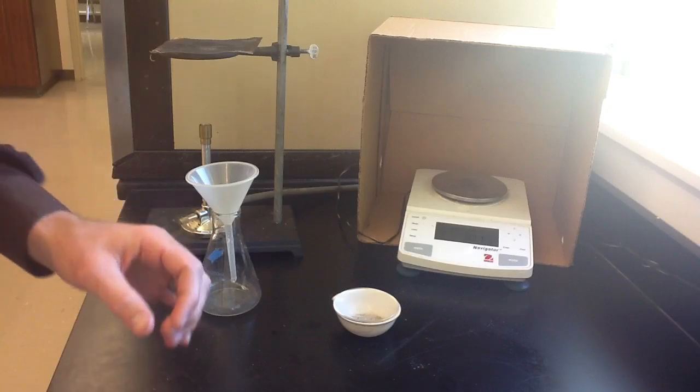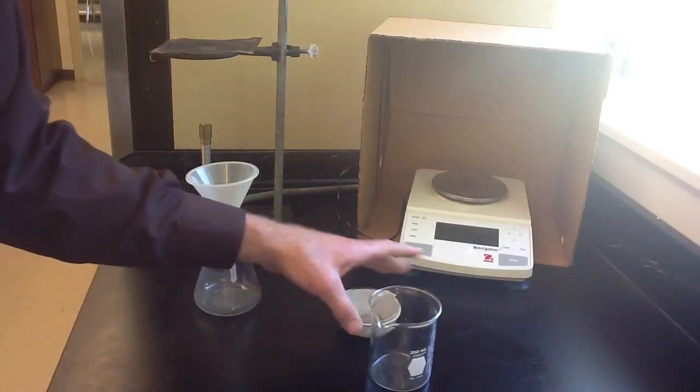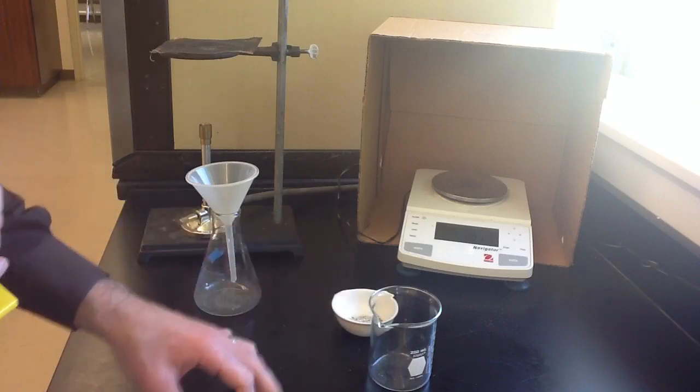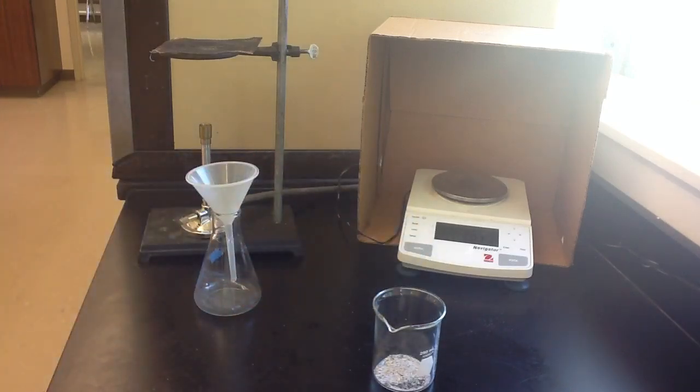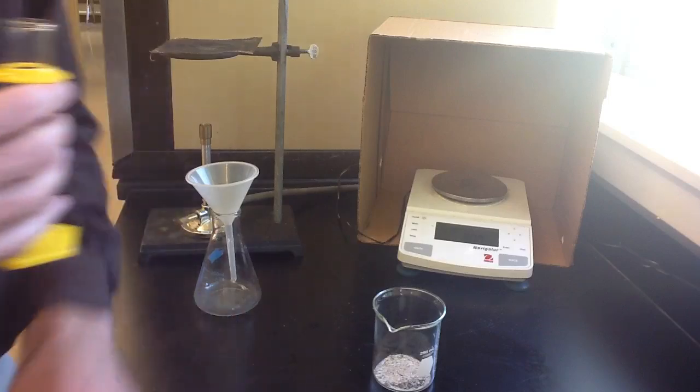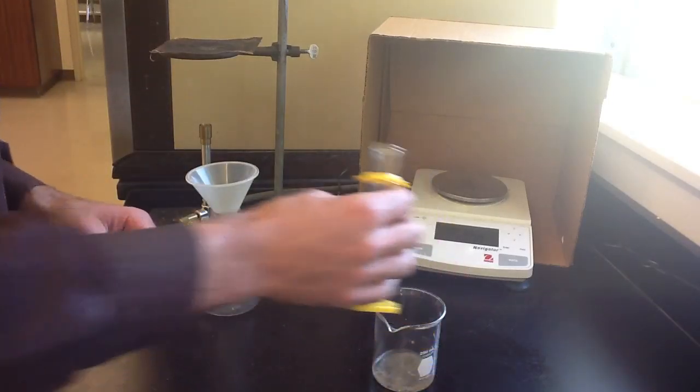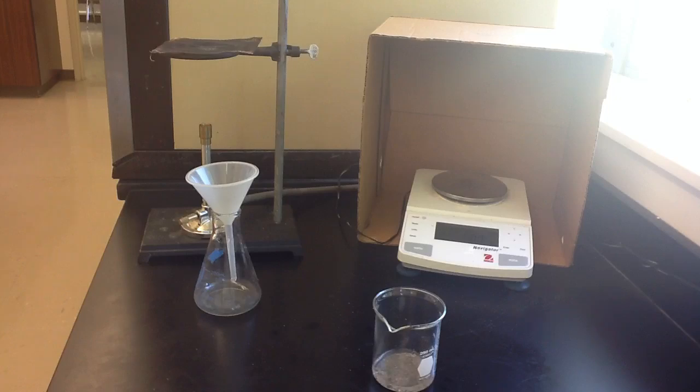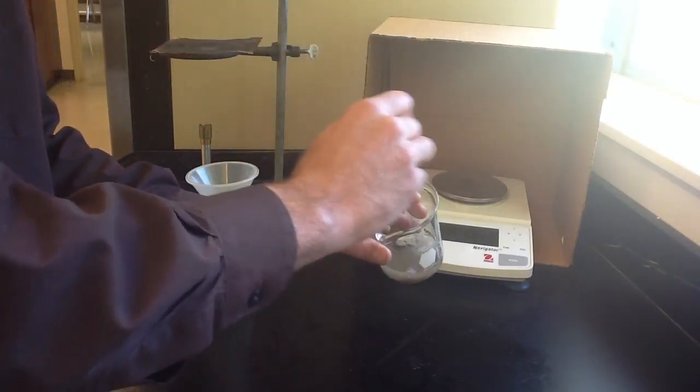The next step is to dissolve the salt and sand in a bit of water. So we're using differences in physical properties. We know that salt will dissolve in water and sand will not. So we pour our mixture into a small beaker. And then we're going to add about 10 milliliters of water. And the water will dissolve the salt, but it won't have any effect on the sand.